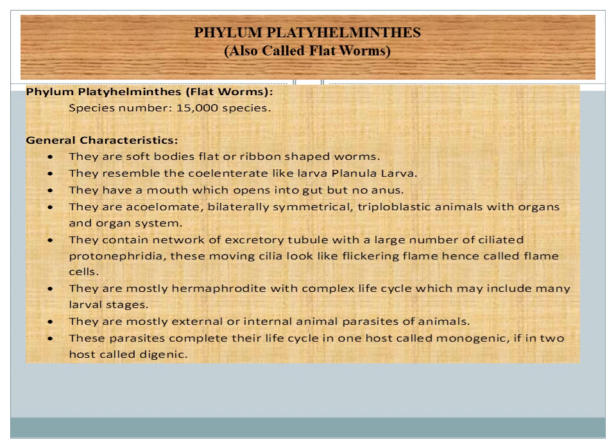They have a complex life cycle which may include many larval stages. They are mostly external or internal animal parasites — endoparasites depend on the host internally, while exoparasites depend on the outer covering of the host. Those parasites which complete their life cycle in one host are known as monogenic. Some of them are digenetic, meaning those parasites which complete their life cycle in two hosts.